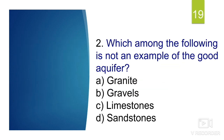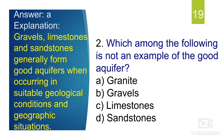The next question is: which among the following is not an example of a good aquifer — granite, gravels, limestone, or sandstone? Gravel, limestone, and sandstone generally form good aquifers when occurring in suitable geological and geographical conditions. However, granite is not a fine example of an aquifer. Geological conditions are also responsible for determining whether a rock formation is suitable for aquifer properties.